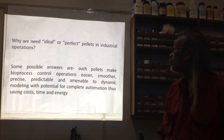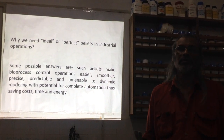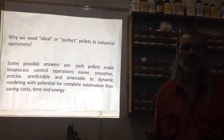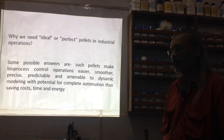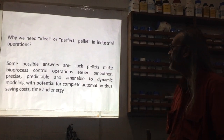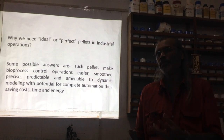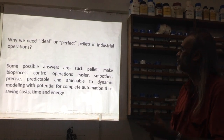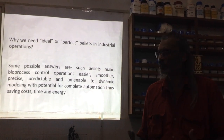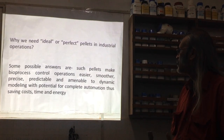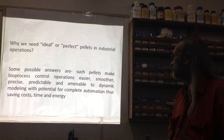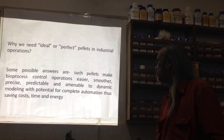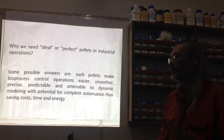Why do we need ideal or perfect pellets in industrial operations? When we screen a large number of strains, the purpose is their application in a bioprocess. Some possible answers: such pellets make bioprocess control operations easier, smoother, precise, predictable, and amenable to dynamic modeling with potential for complete automation, thus saving cost, time, and energy.